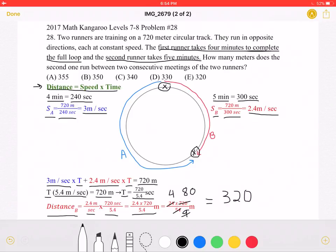The distance of runner B is equal to 320 meters, which is answer choice E.